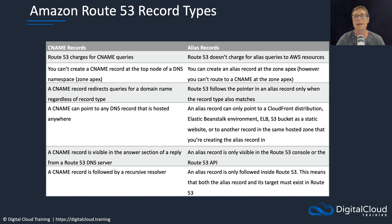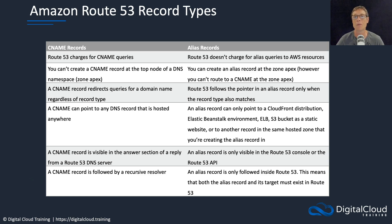A CNAME record is a canonical name record, where the resolver resolves one domain name to another domain name. Route 53 does charge for CNAME queries. Also, you can't create a CNAME record at the top of the DNS namespace — that's called the zone apex. So with example.com, you wouldn't be able to create a CNAME record for example.com mapping to a different DNS domain name. However, if you had a subdomain like dev.example.com, you could create a CNAME record for that subdomain pointing to another DNS domain name.